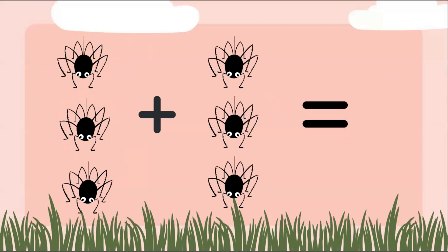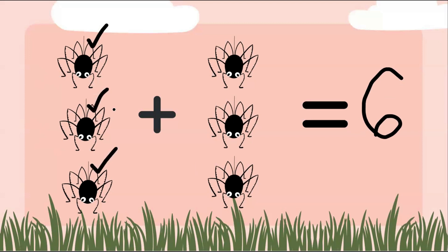I have some spiders here — can you solve this one on your own? I'll give you some think time. When you have your answer, go ahead and shout it out. Excellent job, you're correct! The answer is six. Count with me: one, two, three bugs in this group, and we add them to the other group — three, four, five, six. We have a total of six spiders.